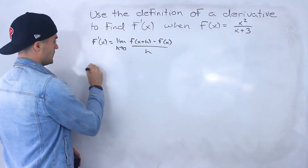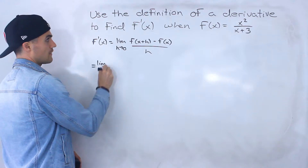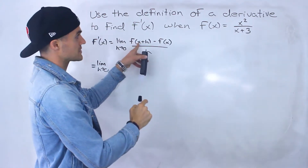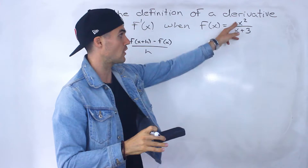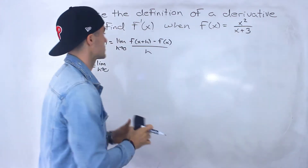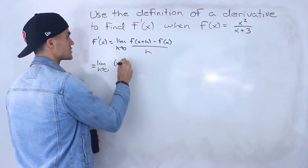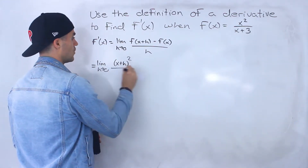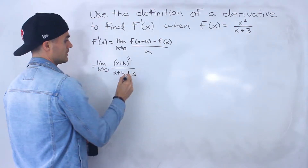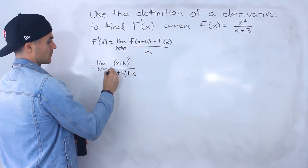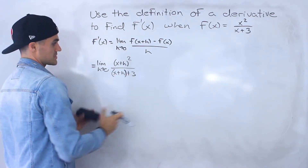So applying it to this specific function that we're working with, f of x plus h is going to be what? We would plug in x plus h for all of the x's, so we would end up having x plus h squared over x plus h plus 3. x plus h went in for this x, so it's x plus h plus 3.